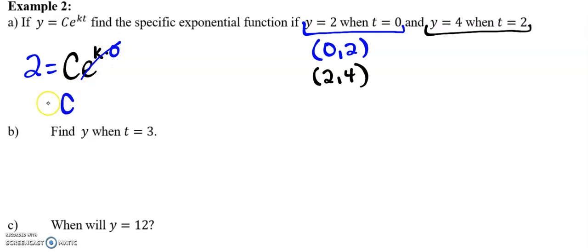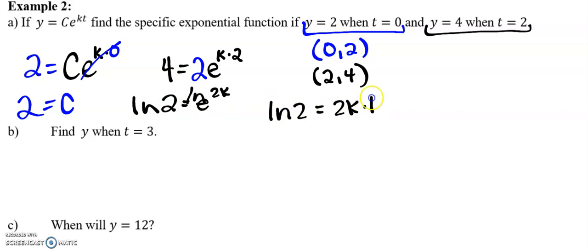I'm going to use the initial condition 2 is equal to C e to the k times 0. Well, anything to the 0 power is just going to be 1, which means that C is equal to 2, which makes sense because our initial condition, right? At time 0, we have a value of 2. Now what I can do is I can use this other point to help me find my k value. So I know this 2 is staying there. I now have 4 equals 2 e to the k times 2.